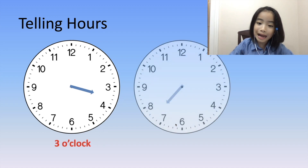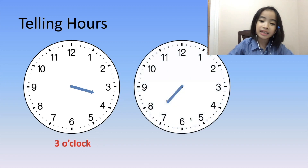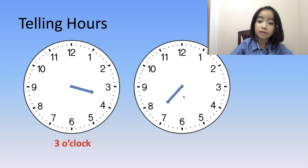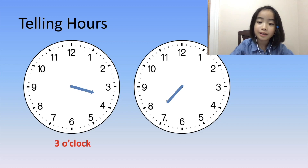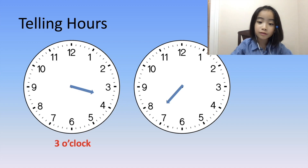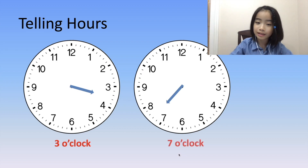Now, let's do another example. Here, the hour hand is pointing between 7 and 8. According to the rule, it's 7 o'clock.